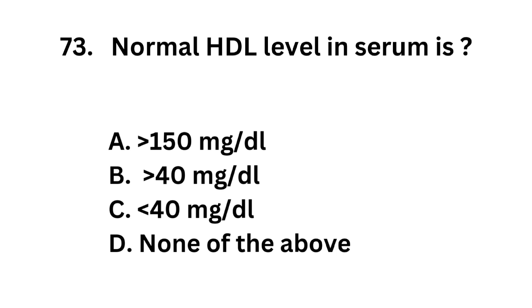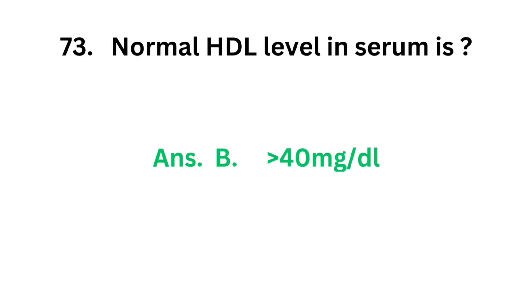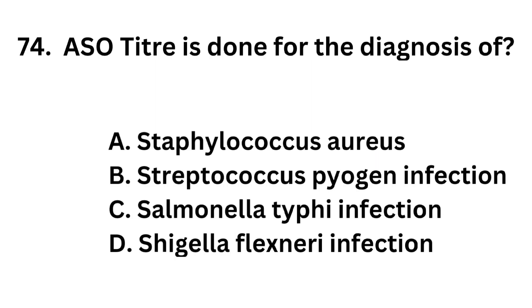Question number 73. Normal HDL level in serum is: Option A, more than 150 mg per deciliter; Option B, more than 40 mg per deciliter; Option C, less than 40 mg per deciliter; Option D, none of the above. The correct answer is Option B, more than 40 mg per dl. Normal HDL level in serum is more than 40 mg per dl.